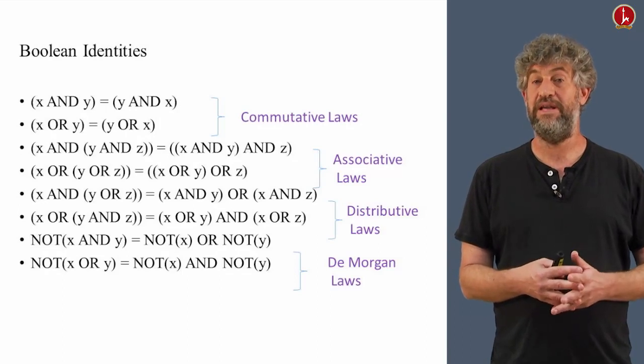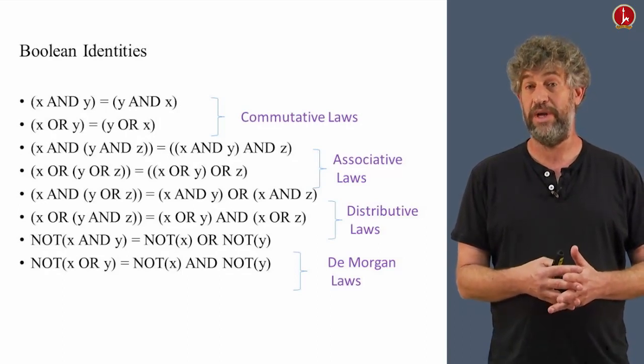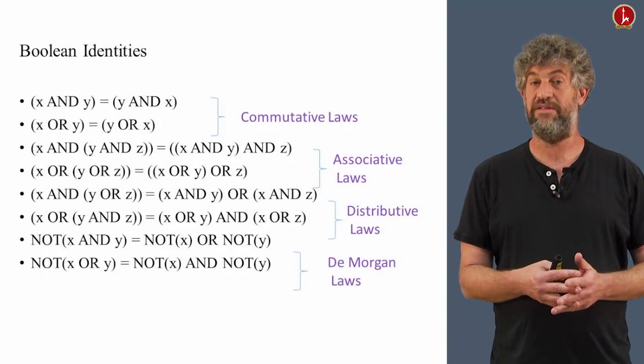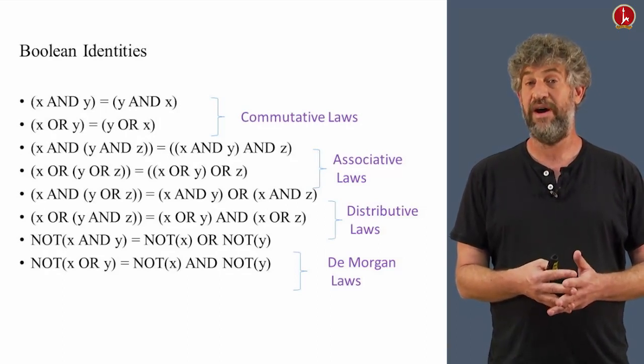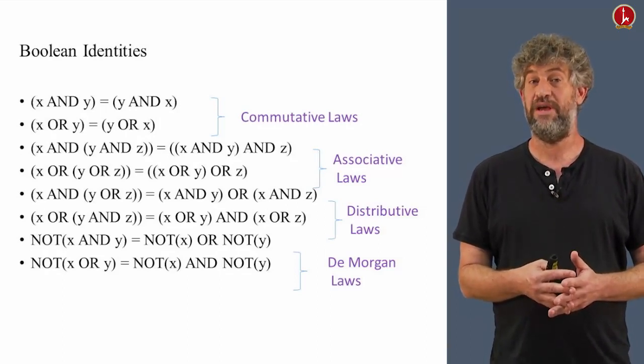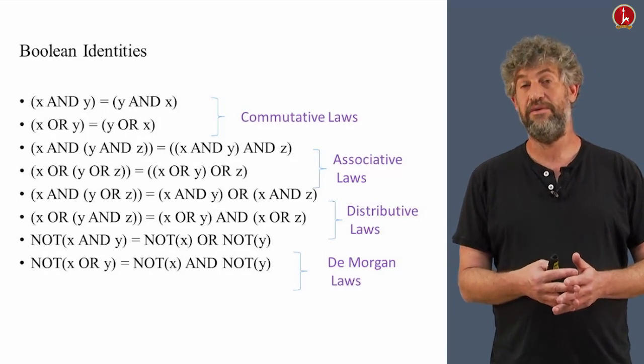Now, all these laws can be easily proved by simply listing all the possibilities in a truth table and verifying that they get the same truth table for the left hand side and the right hand side.